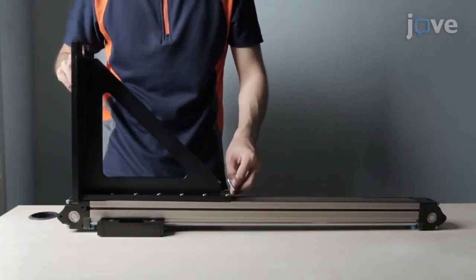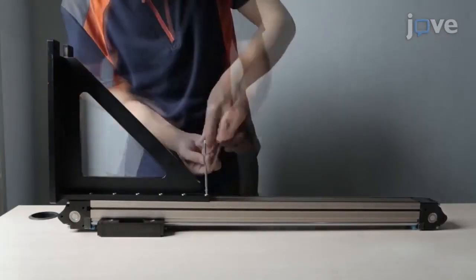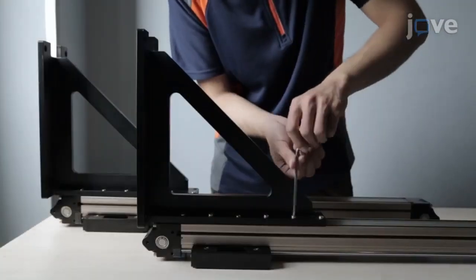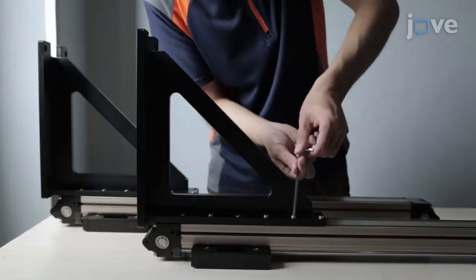Pull the triangle frame to the end that is distal to the shaft and tighten the screws. Attach the other right triangle frame to the other Z-rail in the same way.